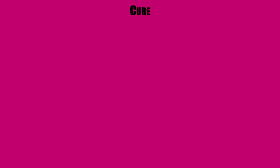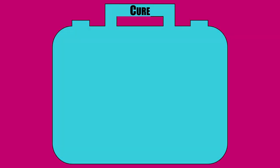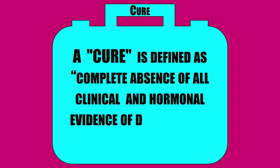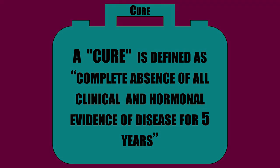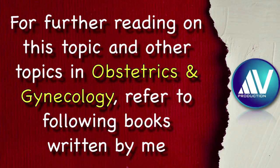In the end, to summarize: vesicular mole and its cancerous spectrum — that is, GTN — can be completely cured with appropriate treatment. A cure is defined as complete absence of all clinical and hormonal evidence of the disease for 5 years. This brings me to the end of Part 2 of my e-lecture on vesicular mole. I hope you have enjoyed this academic feast on vesicular mole.